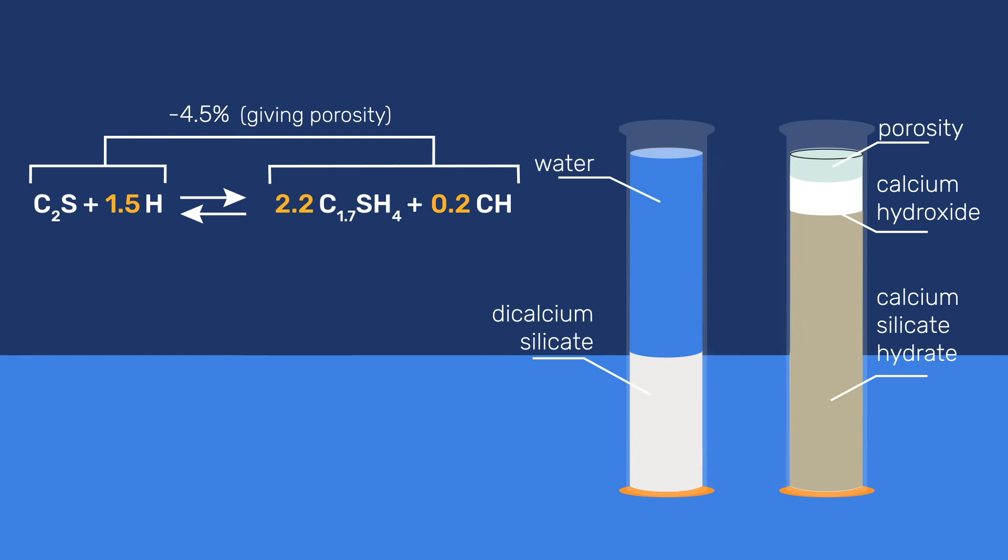More importantly, the solid volume goes from 1 to 2.4 units, corresponding to an increase of 140 percent, much larger than the 36 percent increase provided by the pozzolanic reaction. This explains the higher efficiency of these natural cements over pozzolanic mortars in terms of final strength.